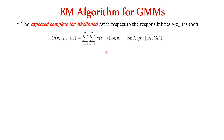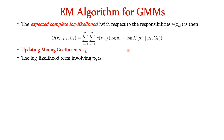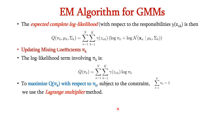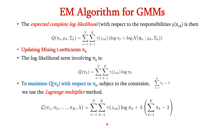Now we have the complete log likelihood function. Let us update the parameters μk, σk and πk. First, let us update the mixing coefficient πk. The log likelihood term involving πk is taken separately: Q(πk) = double summation of γ(znk) · log πk. To maximize Q(πk) subject to the constraint that summation from k=1 to K of πk = 1, we use the Lagrange multiplier method. Applying Lagrange multipliers, the equation becomes Q(πk) plus λ · (summation from k=1 to K of πk minus 1).